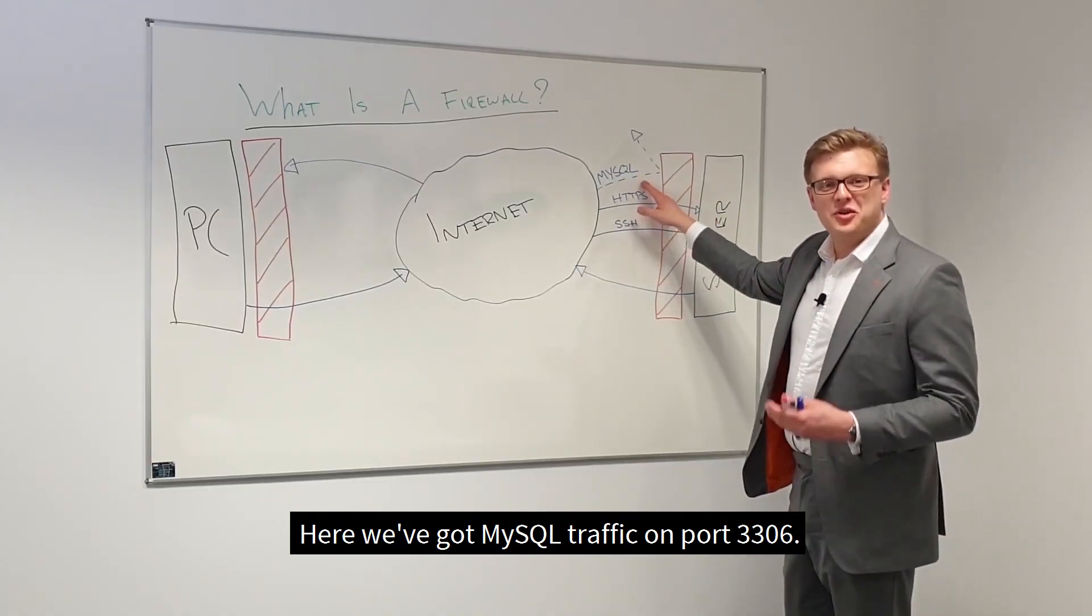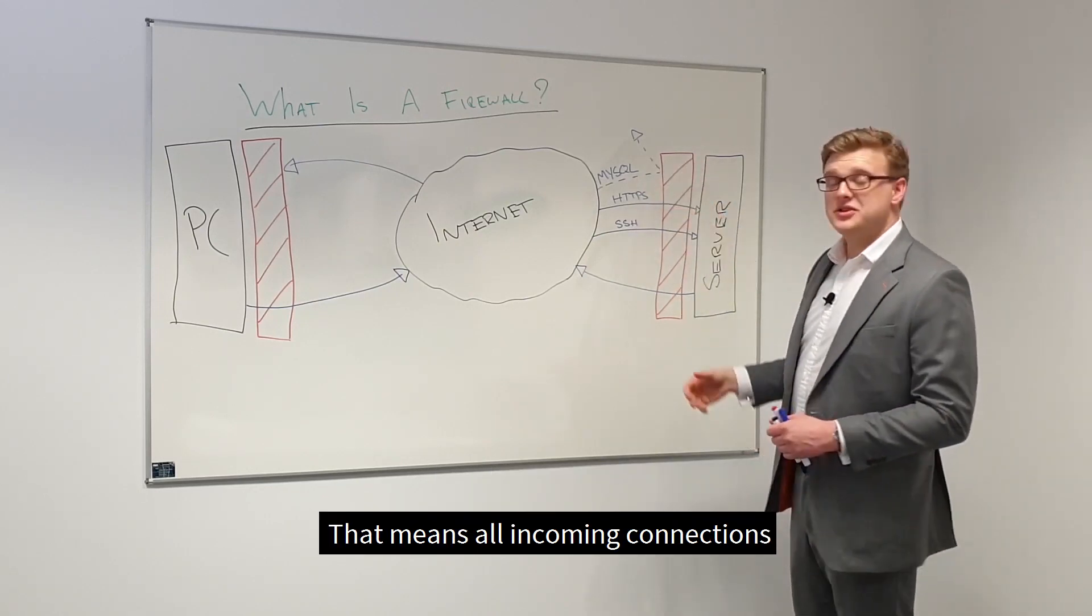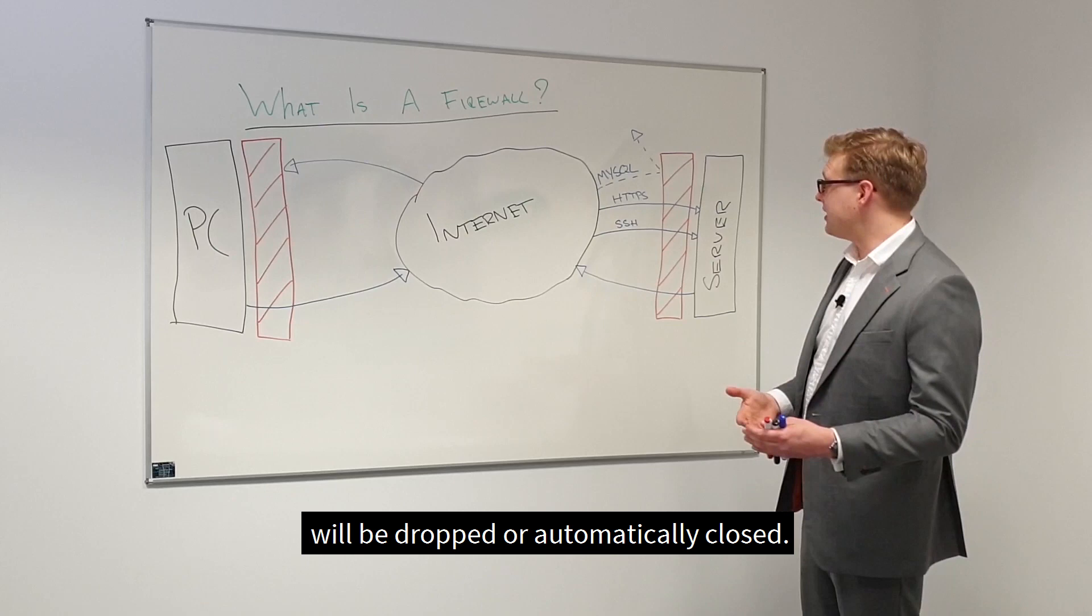Here, we've got MySQL traffic on port 3306. As you can see, it's blocked on the firewall. That means that all incoming connections will be dropped or automatically closed.